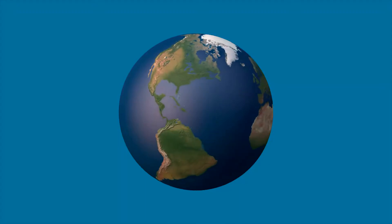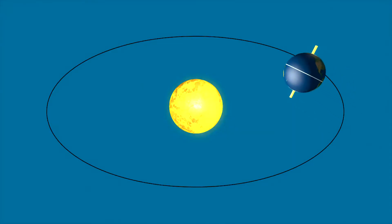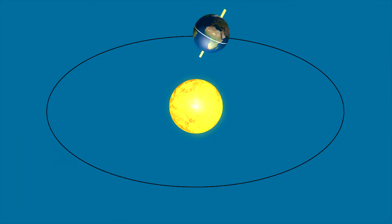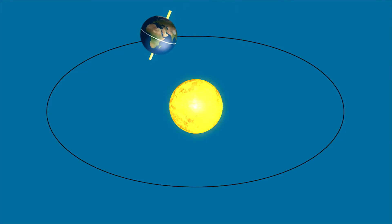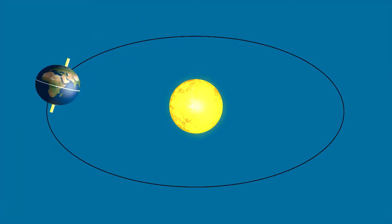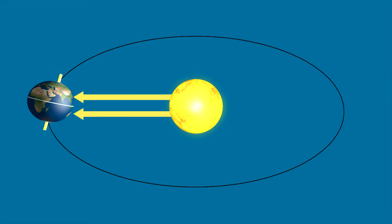This is Earth. Earth rotates all the way around the sun every year. As it moves, different parts of Earth tilt toward or away from the sun. This causes the seasons to change.